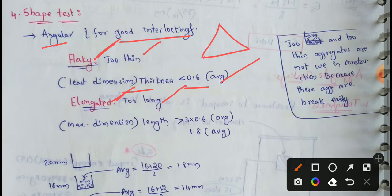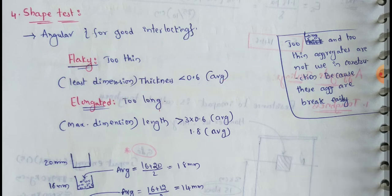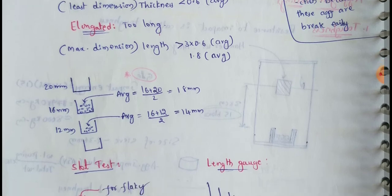The elongation index is the percentage by weight of particles whose maximum dimension or length is greater than 1.8 times their mean dimension. These are the flakiness index and elongation index definitions.